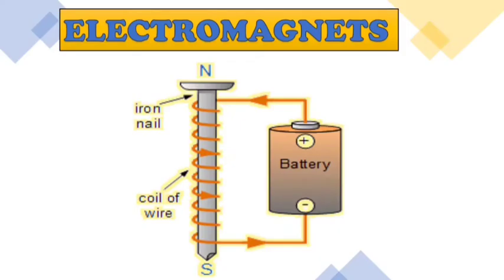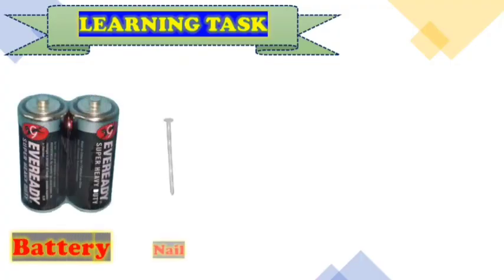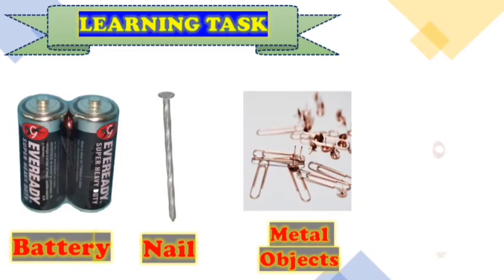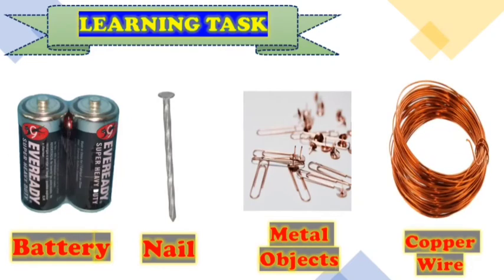Electromagnet's class is composed of the following. We have the battery, the nail, the metal objects, and a copper wire. So, this time, let's do this activity to make your own electromagnet.